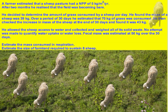Let's apply this information to a real-world situation. A farmer estimated that a sheep pasture had a net primary productivity of 5 kilograms per meter squared per year. After two months, the field was becoming bare and the grass could not sustain the number of sheep he wanted. He found the mass of a sheep was 39 kilograms. Over 30 days, 70 kilograms of grass was consumed by the sheep, and the sheep's mass increased from 39 kilograms to 43 kilograms.